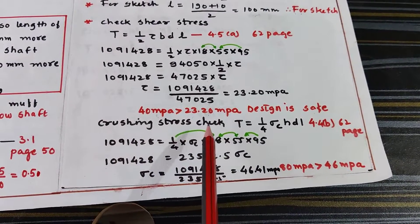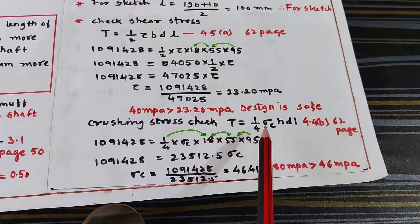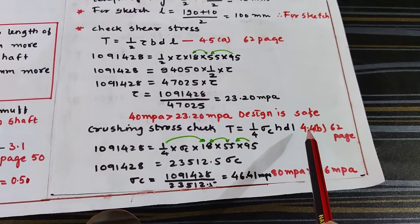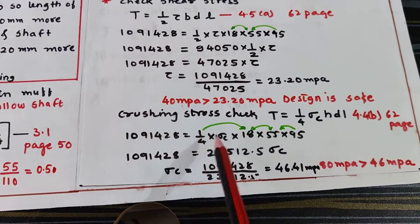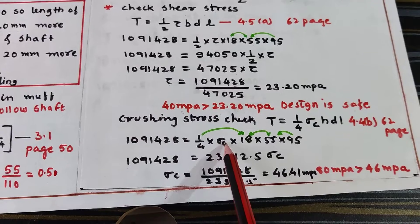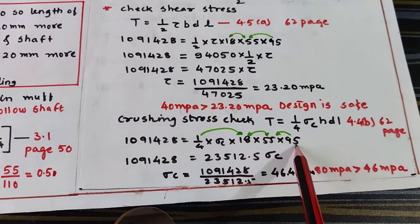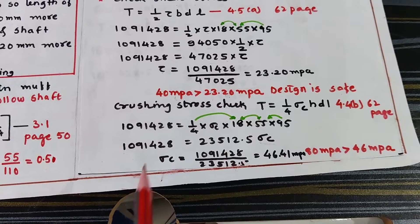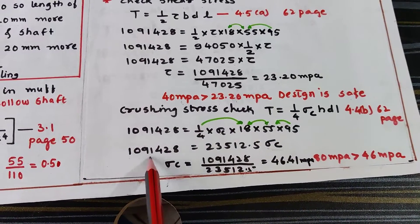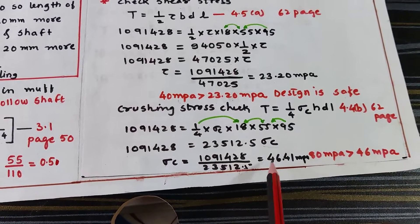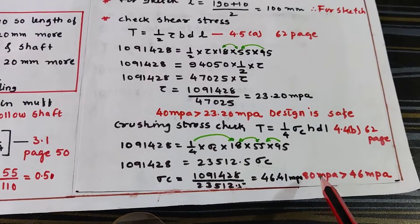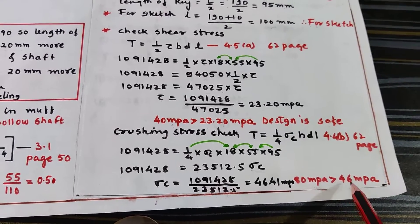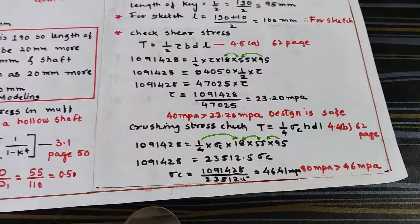Checking the crushing stress in the key using formula T = (1/4) × σc × H × D × L (equation 4.4B, page 62). Substituting values: 1,091,428.5 = (1/4) × σc × 18 × 55 × 95 = 23,512.5 × σc, giving σc = 46.41 MPa. The allowable crushing stress is 80 MPa and the induced stress is 46.41 MPa, so the design is safe. Hope you all have understood this problem.